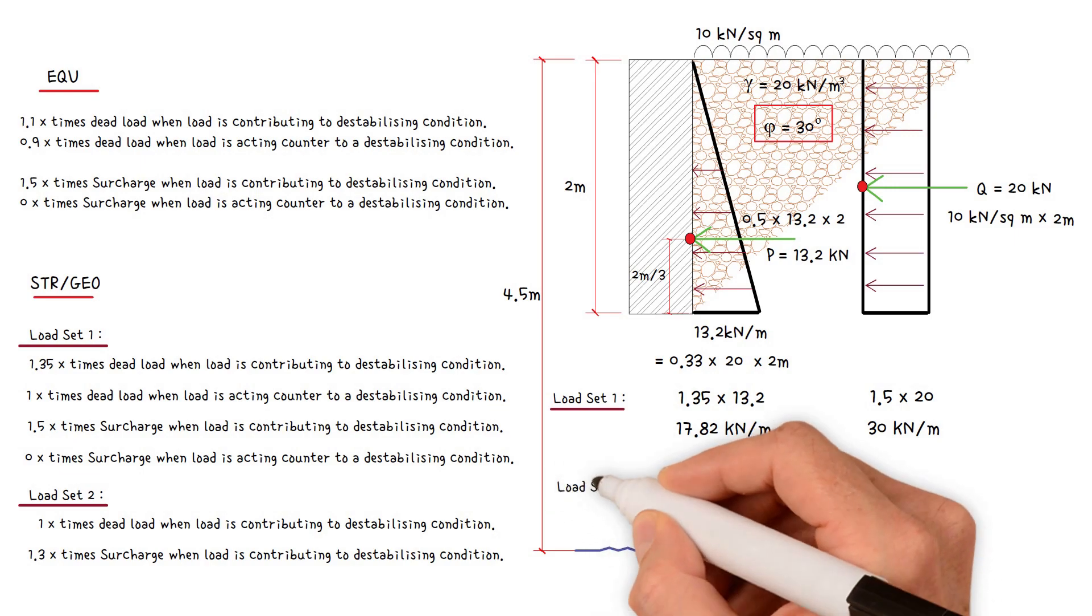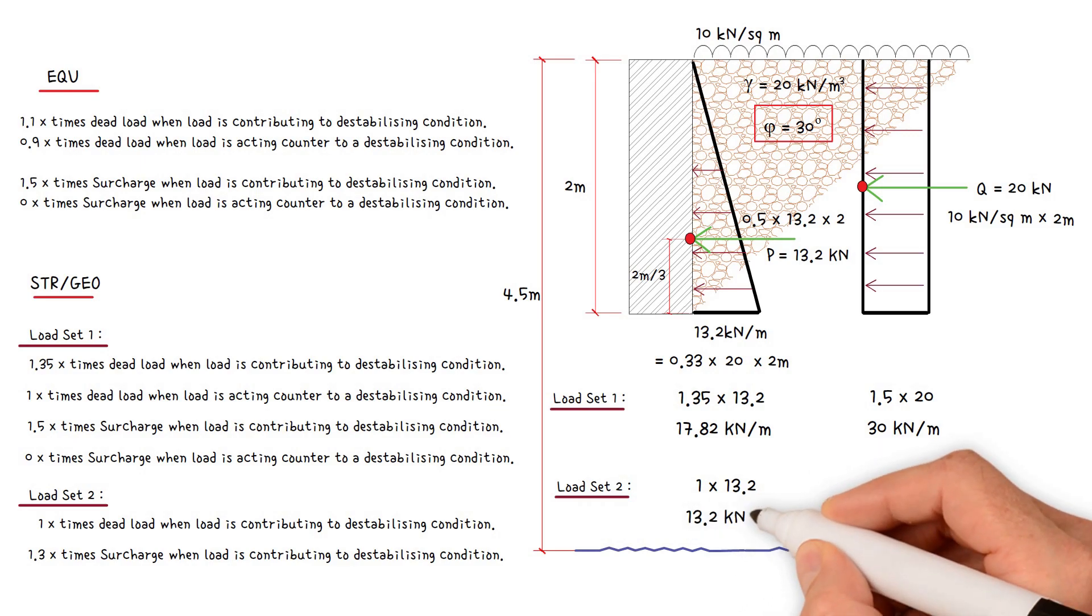For load set 2: 1 times 13.2 equals 13.2 kN per meter, and 1.3 times 20, which equals 26 kN per meter.